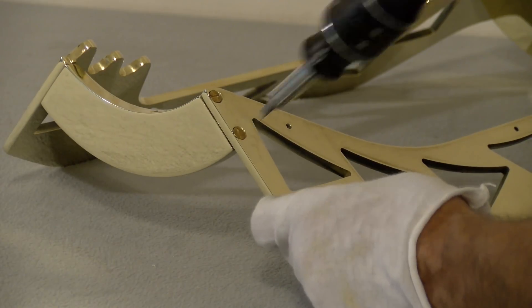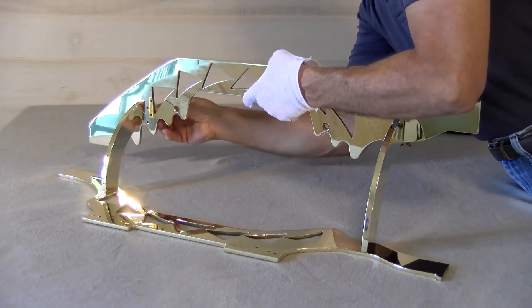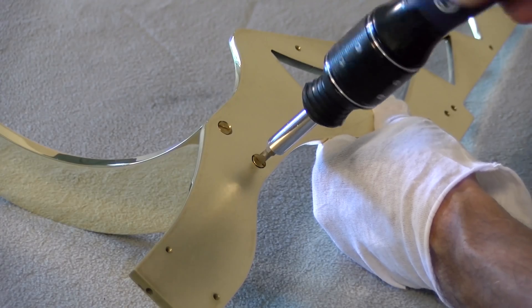The polished frame can now be assembled, preparing it for prism installation. Cotton gloves are now used at this point to prevent the frame from tarnishing.